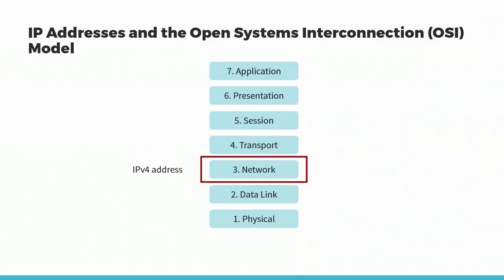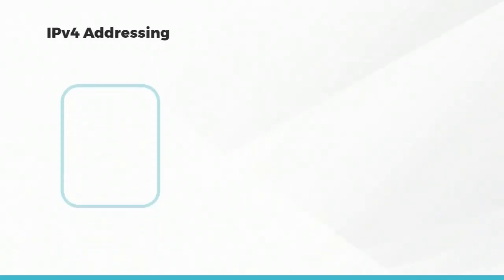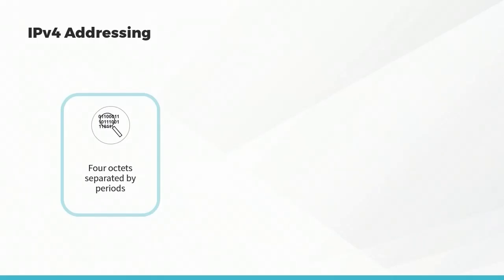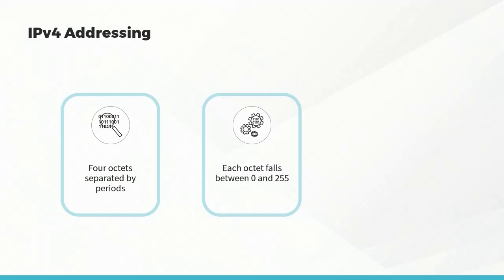The network layer deals with things like routing and software network addressing such as IP addressing. Whether it's IPv4 or IPv6, it still applies to Layer 3. The four components of an IPv4 address are called octets, each a collection of 8 bits, separated by periods. IPv4 addresses are represented as decimal base-10 values, so each octet has a numeric value between 0 and 255, though there are some special-use addresses.